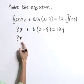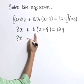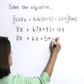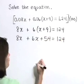Our third line is going to look like 8x plus, distributing, 6x plus 54 is equal to 124.